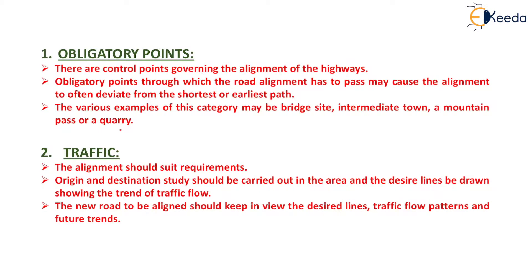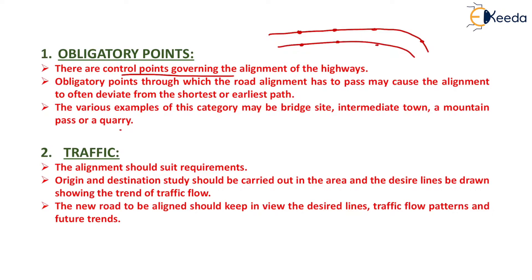Now, what are obligatory points? We have certain control points along a particular alignment of road which need to be analyzed carefully so that we can design a very good alignment along a particular area. There are control points governing the alignments of the highways, and obligatory points through which the road alignment has to pass may cause the alignment to often deviate from the shortest or easiest path.